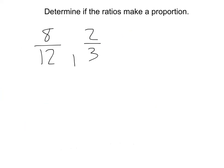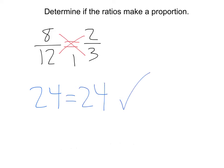Now, instead of simplifying, we're going to cross-multiply to determine if the ratios make a proportion. Here again we have 8/12 and 2/3. Let's set these equal to one another and cross-multiply. 8 times 3 is going to give us 24, then we have 12 times 2, that's also going to equal 24. This is a proportion.